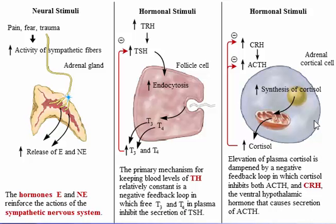Corticotropin-releasing hormone secretion follows a circadian rhythm that causes daily variability of cortisol in the absence of stress. Stressors like those that elicit secretion of epinephrine — pain, fear, physical trauma, infection, prolonged cold, or emotional stress — also elicit secretion of corticotropin-releasing hormone.